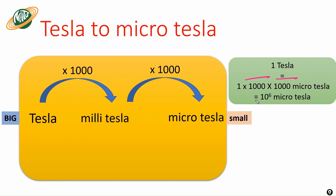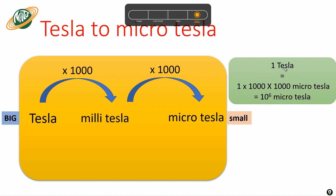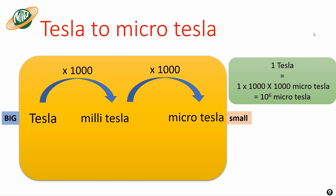So one tesla equals one thousand times another one thousand microtesla — that is nothing but ten to the power six microtesla. Remember: if you want to convert a bigger unit to a smaller unit, you need to multiply. This is tesla to microtesla.